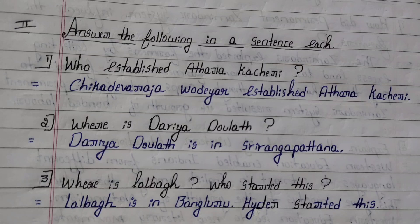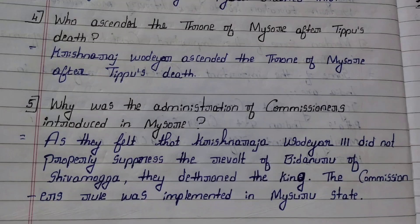Third question: Where is Lalbagh? Who started this? Answer: Lalbagh is in Bangalore. Haider started it. Fourth question: Who ascended the throne of Mysore after Tipu's death? Answer: Krishna Raja Odayar ascended the throne of Mysore after Tipu's death.